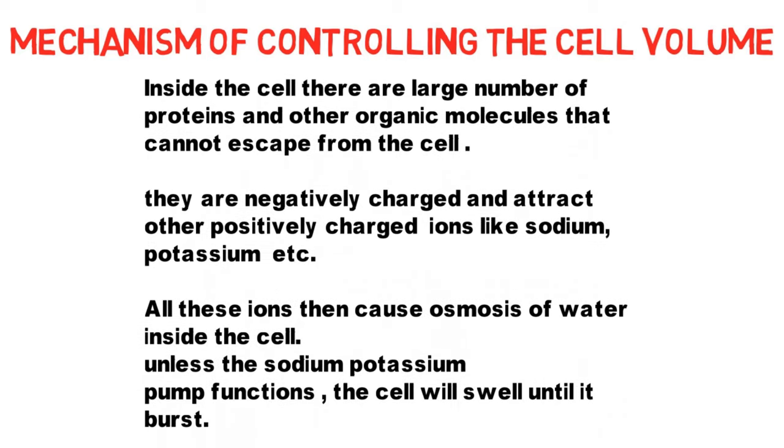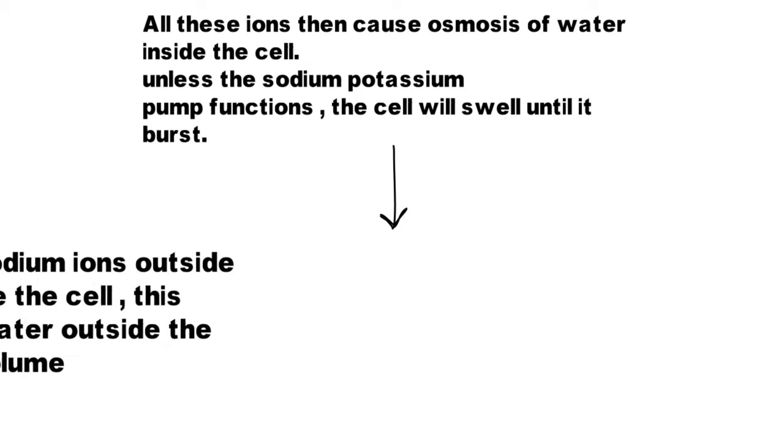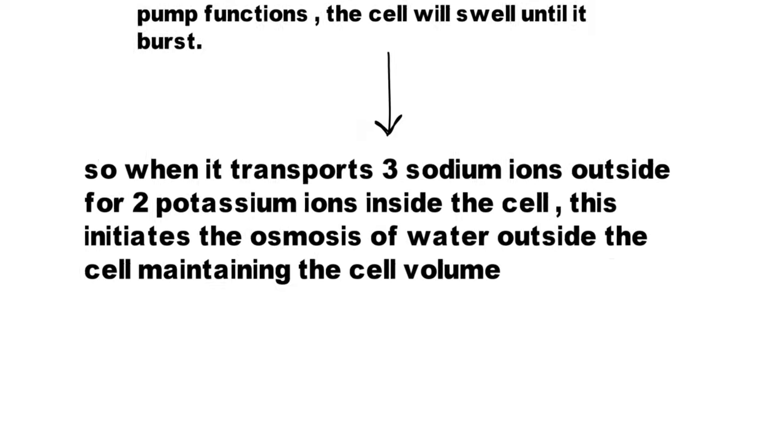Inside the cell there are large numbers of proteins and other organic molecules that cannot escape from the cell. These are all negatively charged and attract positively charged ions like sodium, potassium, etc. All these ions then cause osmosis of water inside the cell. Unless the sodium potassium pump functions, the cell will swell until it bursts. When it transports three sodium ions outside for two potassium ions inside the cell, this initiates osmosis of water outside the cell, maintaining the cell volume.